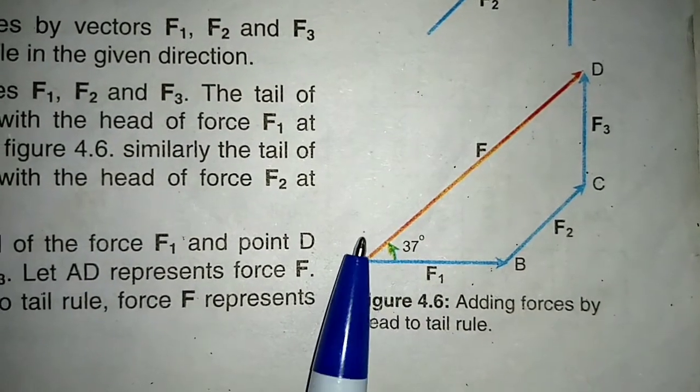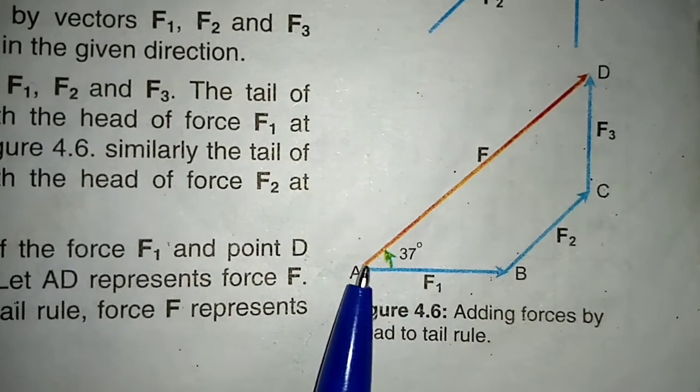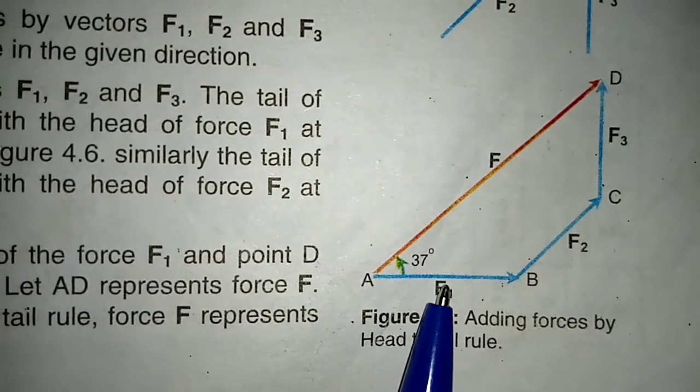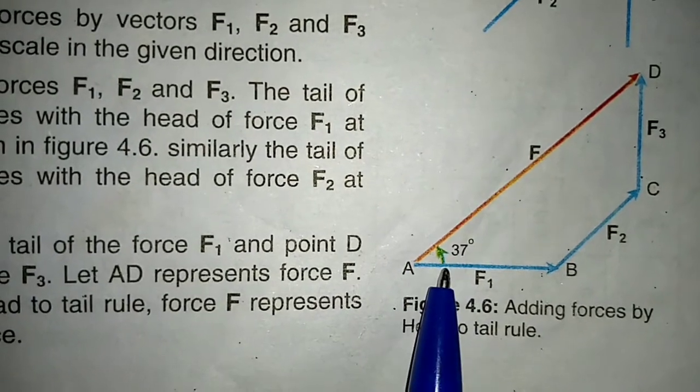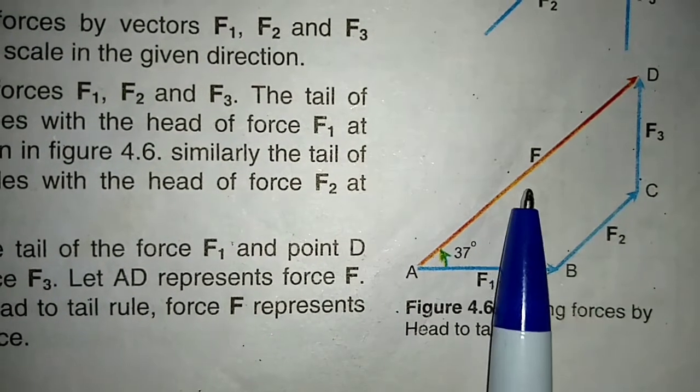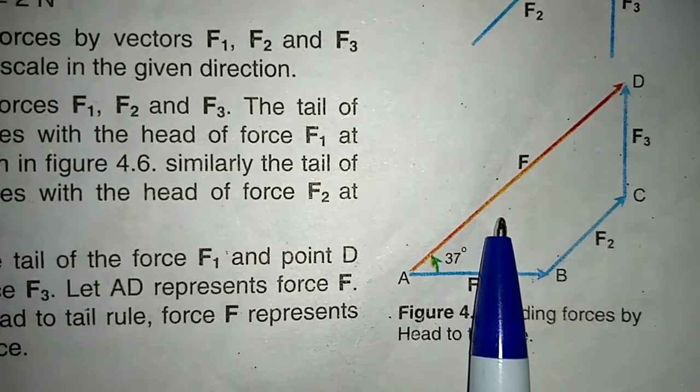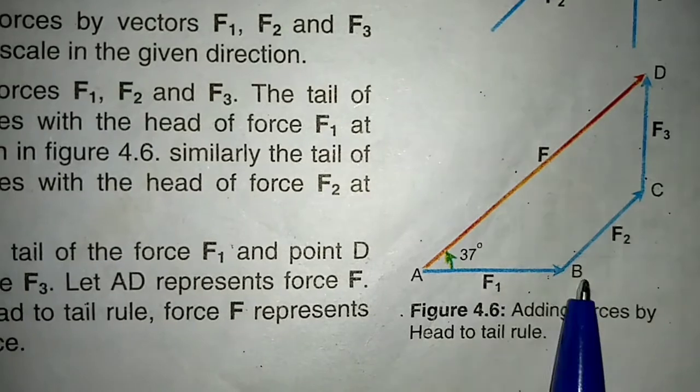Students, for the direction of this vector, we will simply find the angle with the horizontal axis. This horizontal axis is already the x-axis. In this case, the resultant is making an angle of 37 degrees with the x-axis.